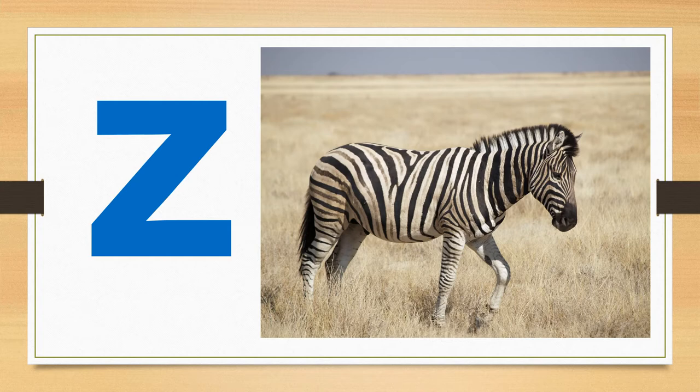The word zebra starts with the sound Z. Z. Zebra. Z. Say it with me. Z. Zebra.